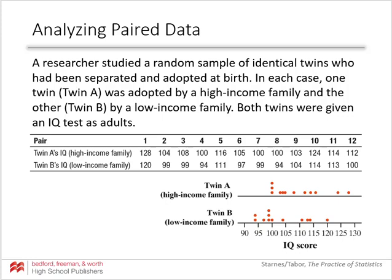We have a researcher who is studying a random sample of identical twins who have been separated and adopted at birth. In each case, one twin — twin A — was adopted by a high-income family, and the other twin — twin B — was adopted by a low-income family. Both twins were given IQ tests as adults.